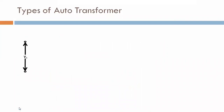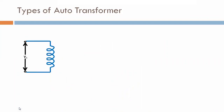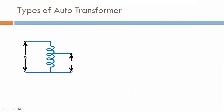Here we are seeing the supply is V1. Here the winding is there, and from that we get V2.